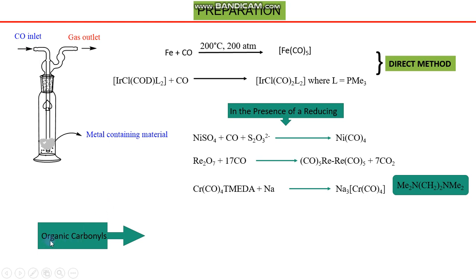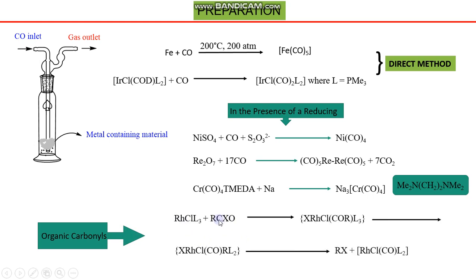A third method uses organic carbonyls as precursors. In this method, organic carbonyl compounds are used as a source of carbon monoxide, and the reaction proceeds as a multi-step reaction. Rhodium chloride with L₃ — where L is trialkyl or triethylphosphine — is used as a starting complex. Rhodium is four-coordinated: one chlorine and three monodentate phosphine ligands, giving a coordination number of four.